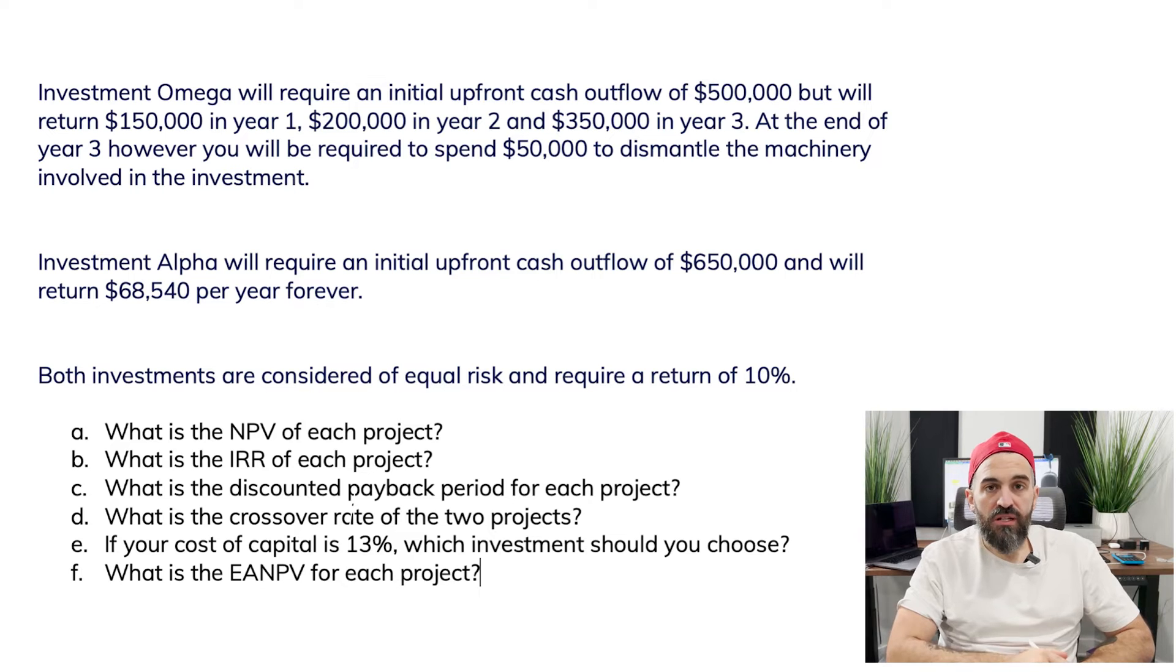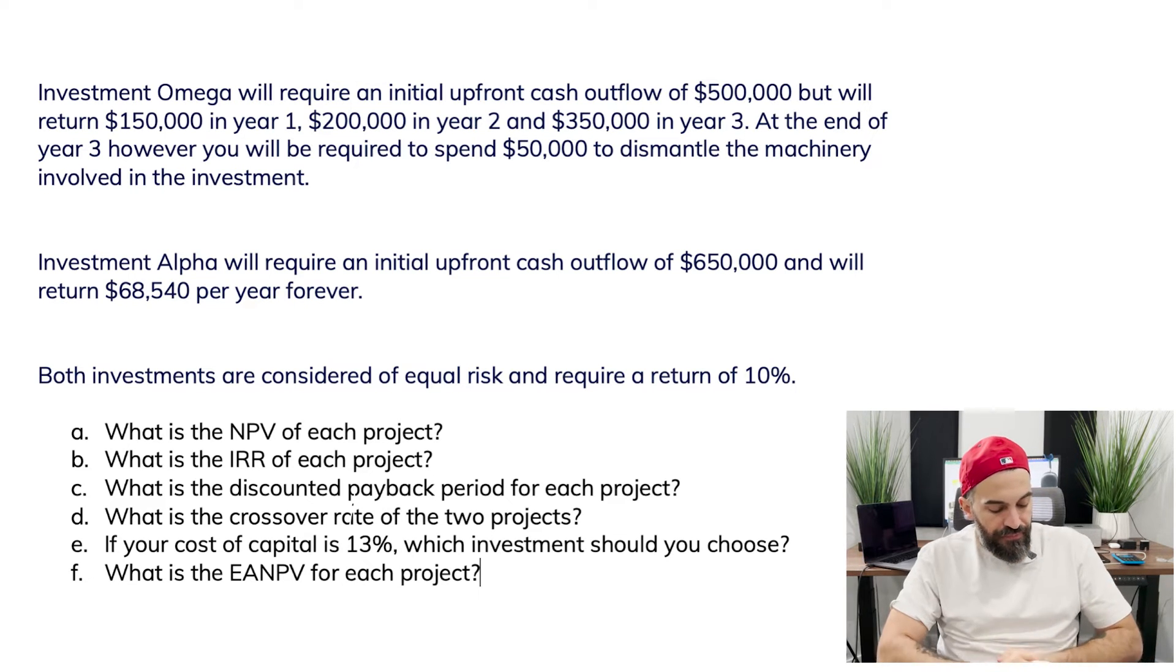Here we've got a capital budgeting situation, it's quite a lengthy one so we're going to break it down in parts. You can always skip ahead to the part you're most interested in or I recommend watching the video throughout. Let's talk about the first project. Investment Omega requires you to pay $500,000 upfront but then will return $150,000 in the first year, $200,000 in the second year, $350,000 in the third year. However, in the third year you're also going to have to pay $50,000 to dismantle the machines.